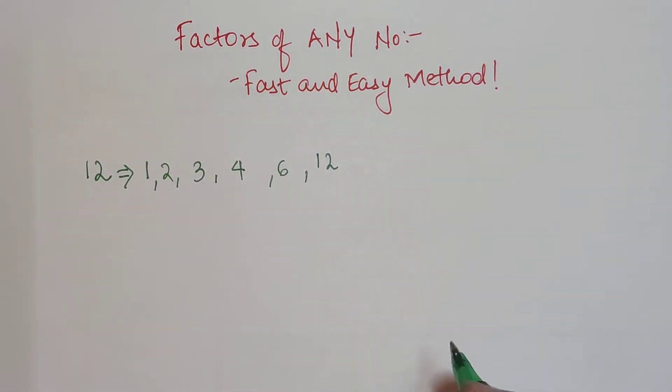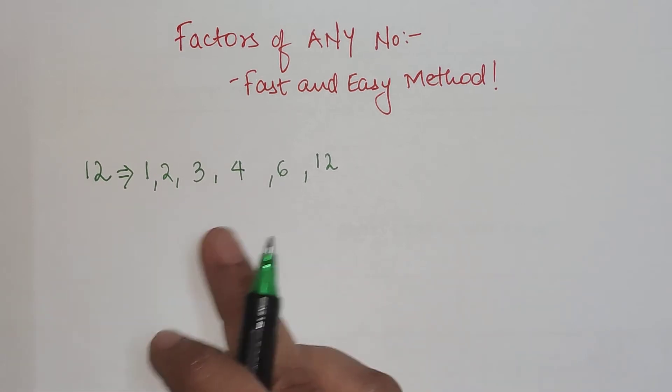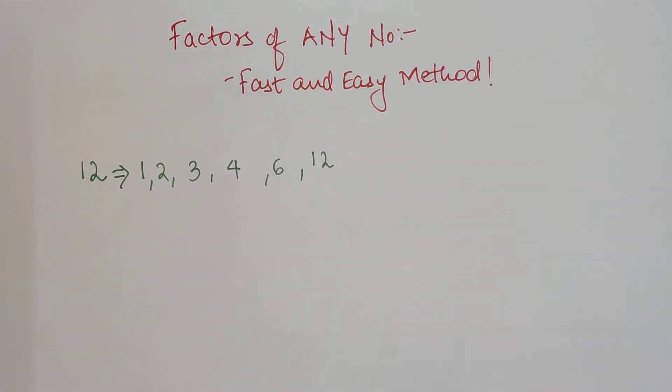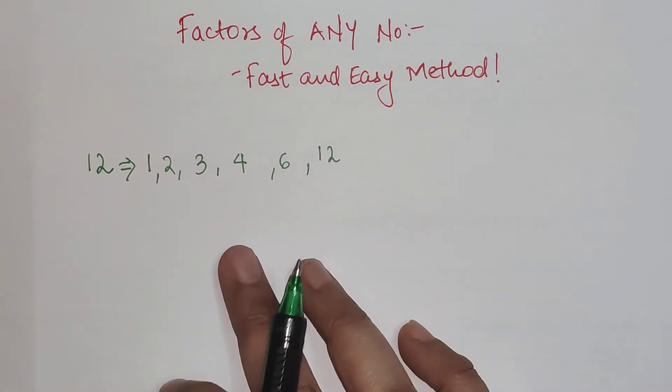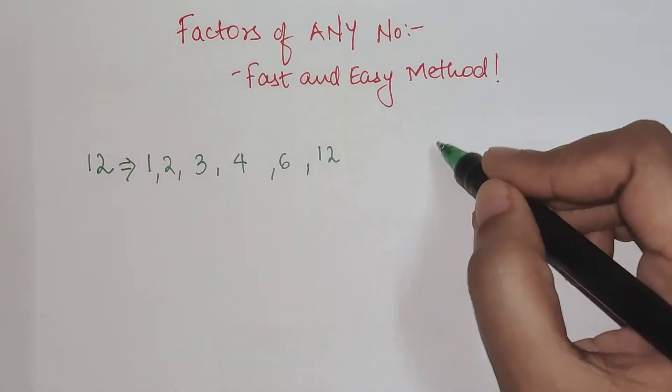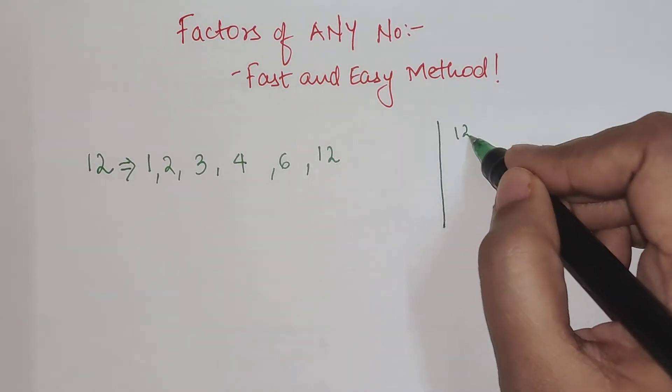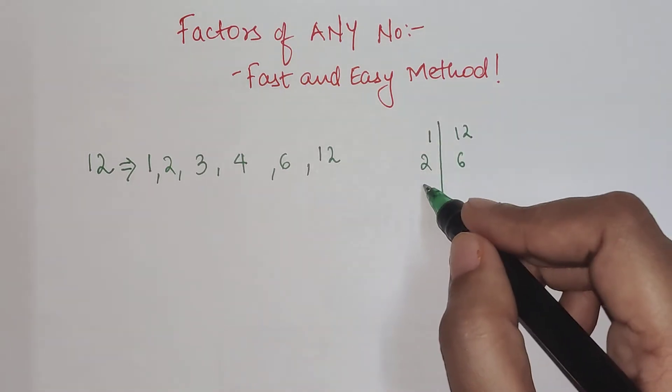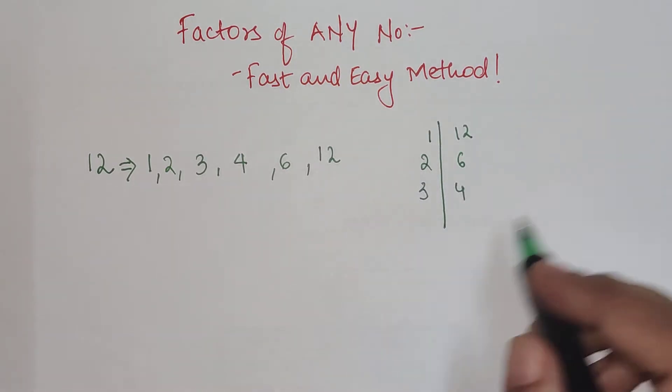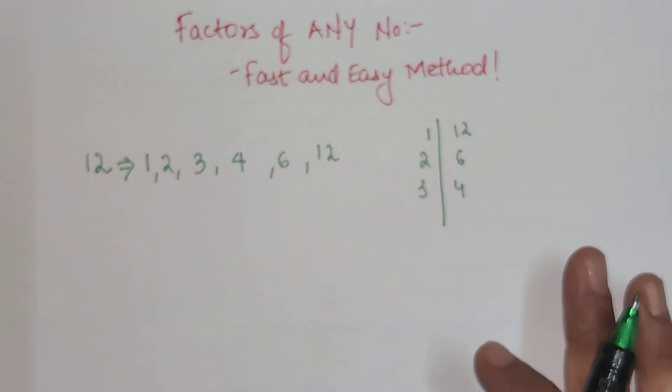After that, there are no numbers which are dividing 12 completely. This is how you are going to find the factor of any given number. You could also do this long division method and get 2 and 6, then 3 and 4. It's not wrong at all.